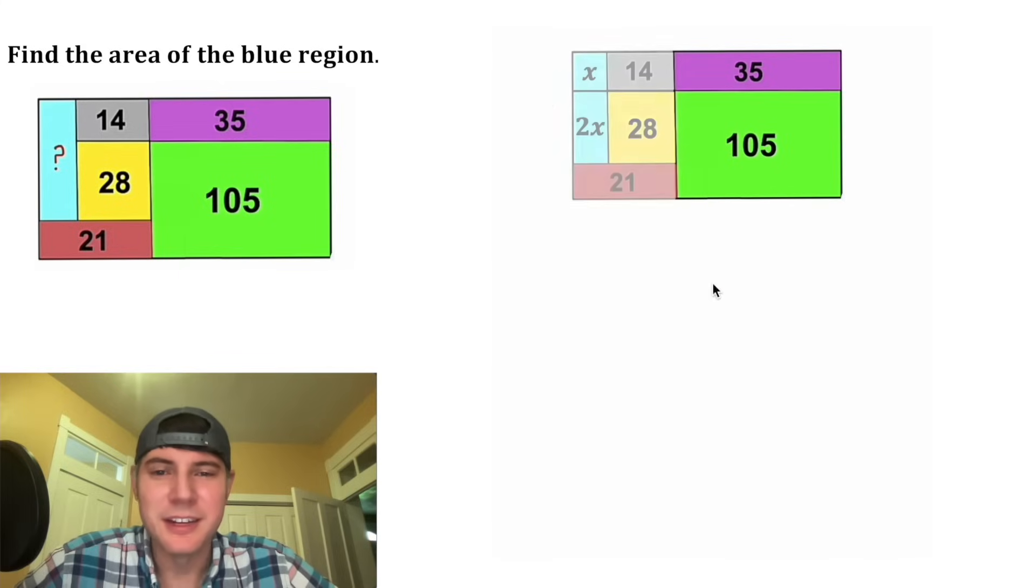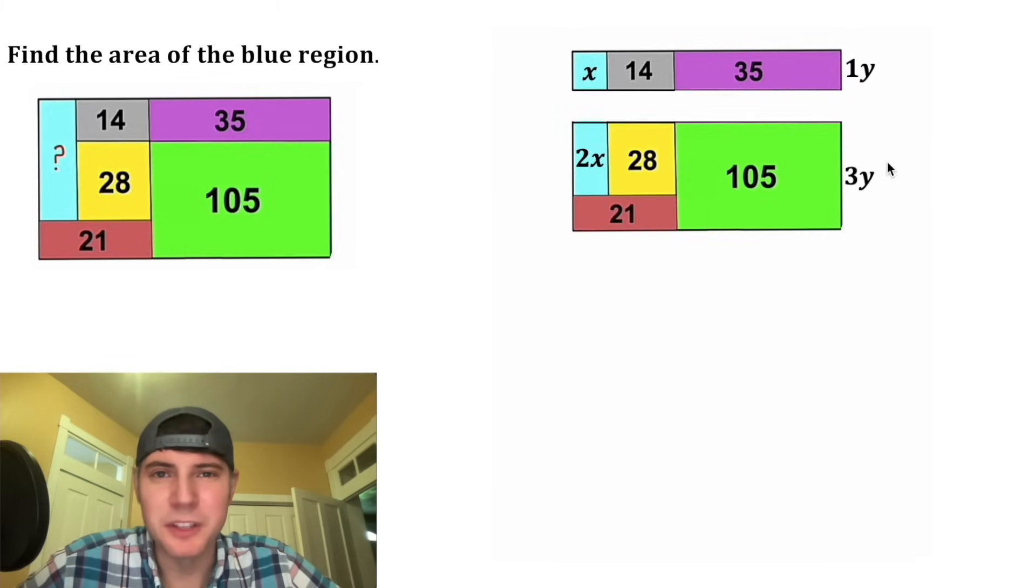And now that we've introduced this line, we can also split it up this way. Next, let's focus on this portion right here, call this side of the purple rectangle y. And then 105 is 3 times 35, so this would be 3y. So now let's split this up.